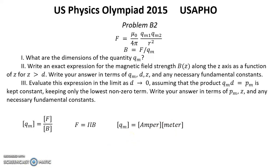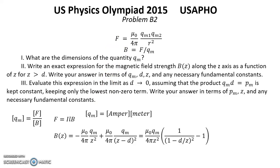Solution for Question 2: Using the definitions in the first and second formulas, magnetic field has the derived expression, and finally we obtain the formula for BZ along the Z axis for the Gilbert dipole.